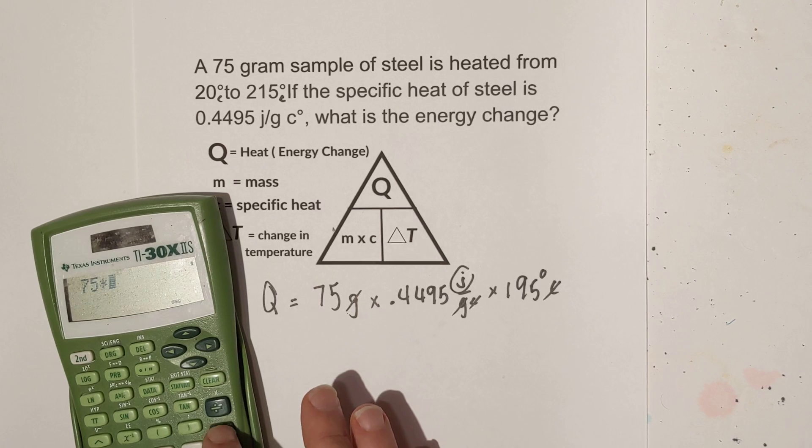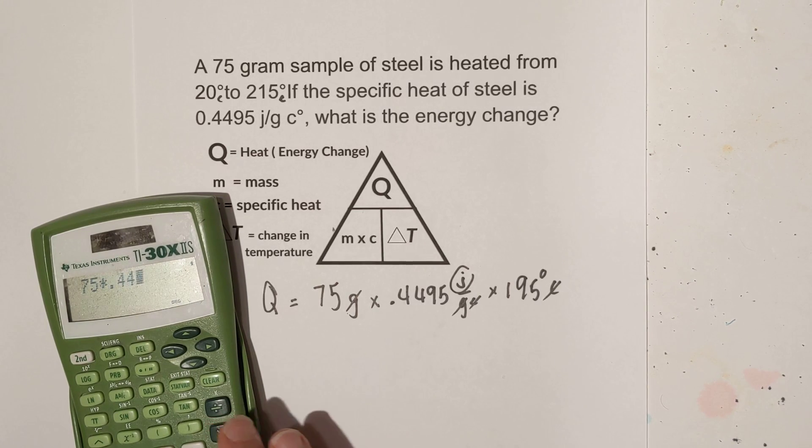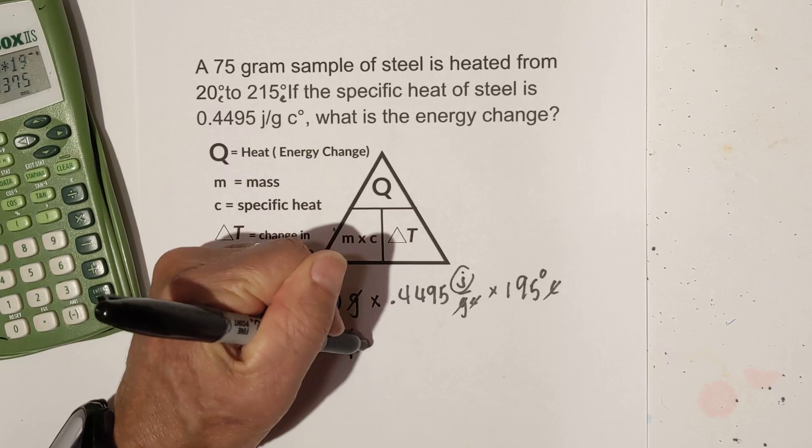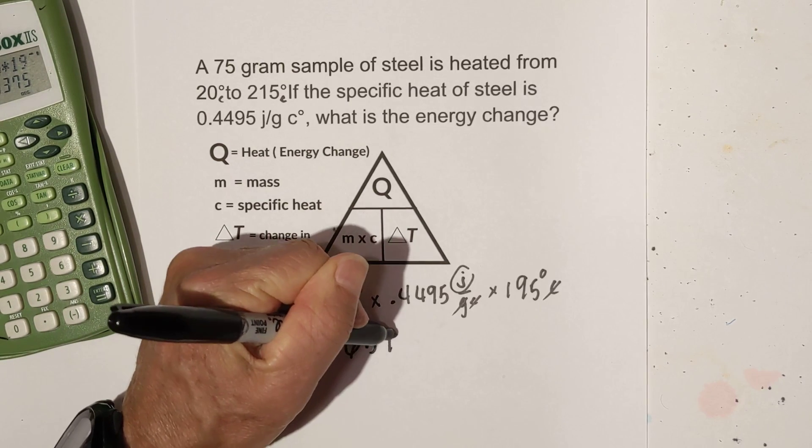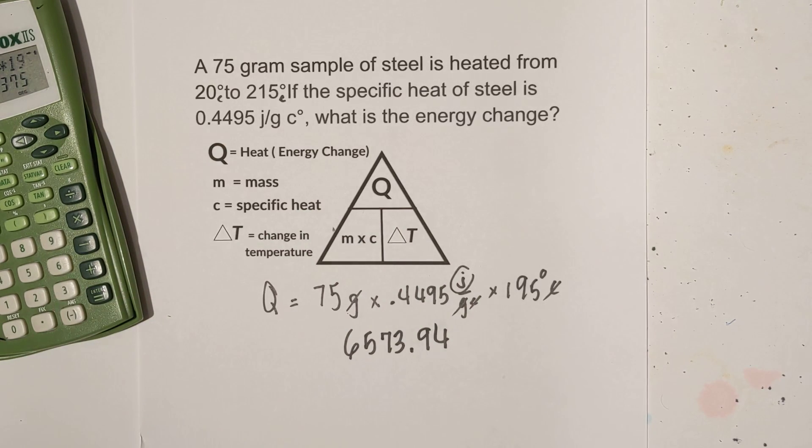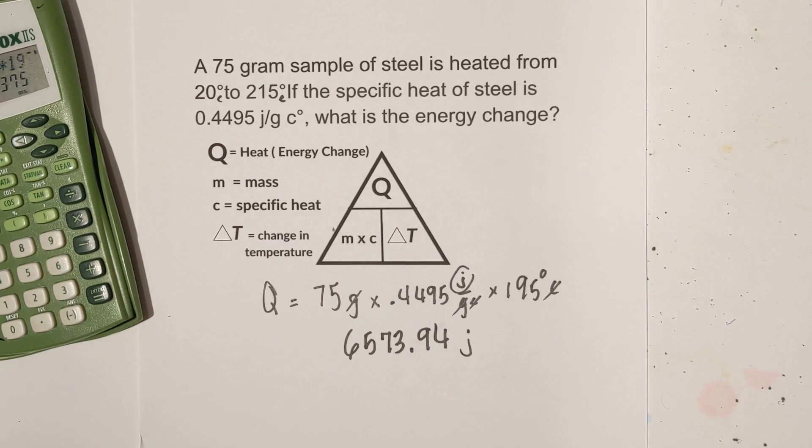Now let's use our calculator. We're going to go 75 times 0.4495 times 195 and that equals 6573.94. And don't forget your unit of measure is joules.